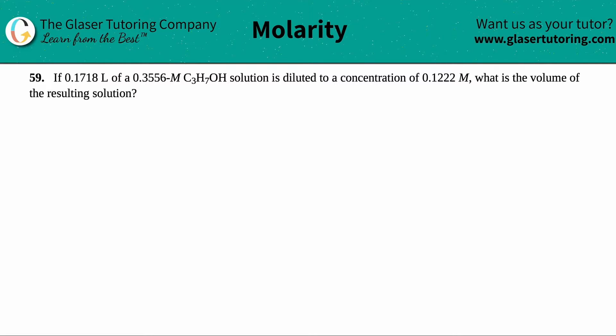Number 59. If 0.1718 liters of a 0.3556 molar solution of C3H7OH is diluted to a concentration of 0.1222 molarity, what is the volume of the resulting solution?